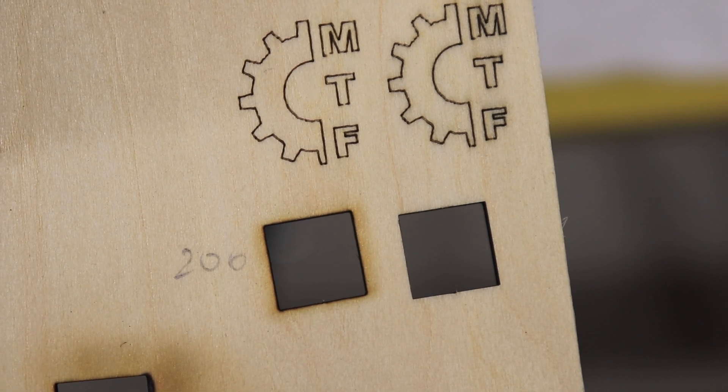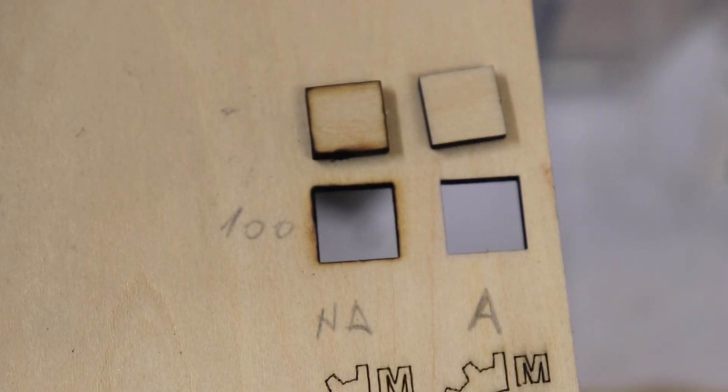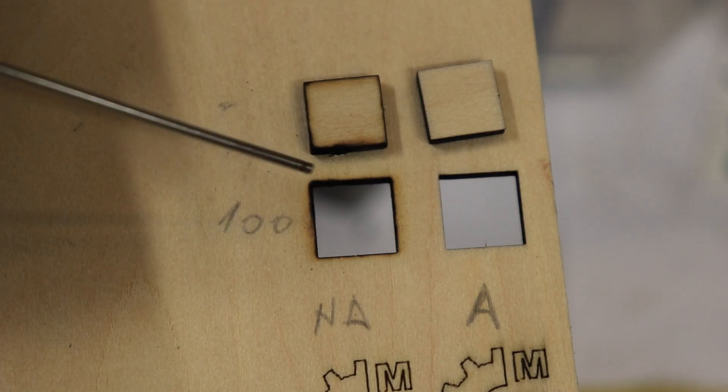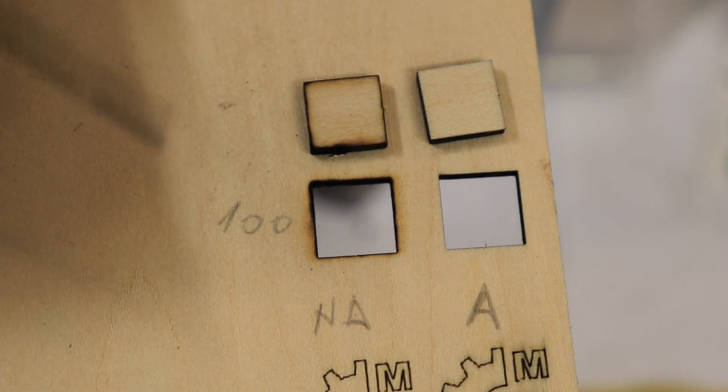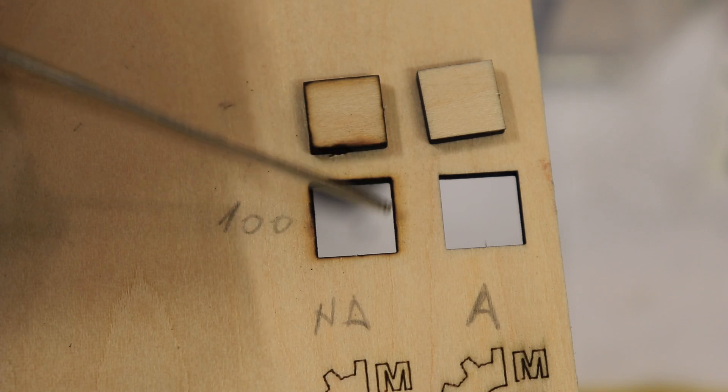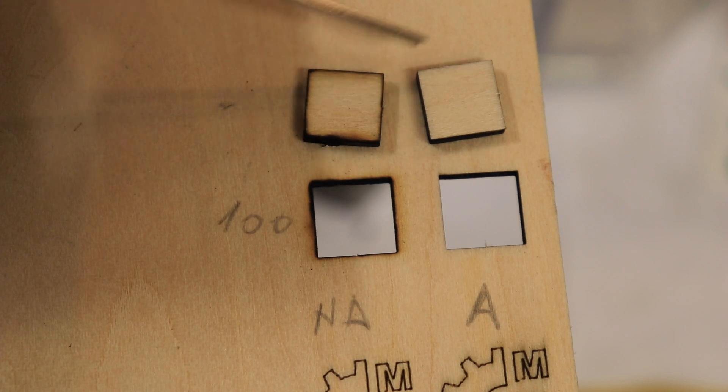So this was the cutting at 200 mm per minute and this one at 100 mm per minute without air assist and with air assist. Definitely I can see much more burn edges here and even on the cutting out part. And this edge is much cleaner.